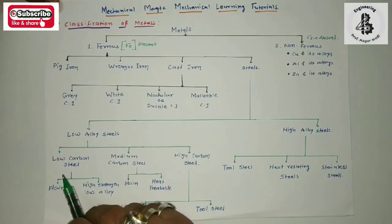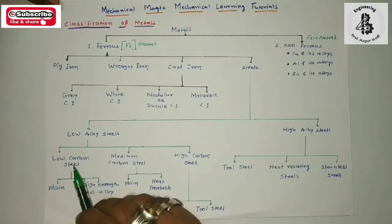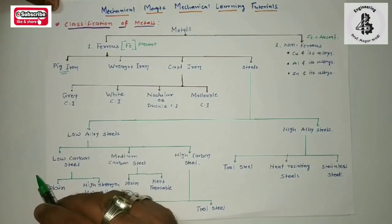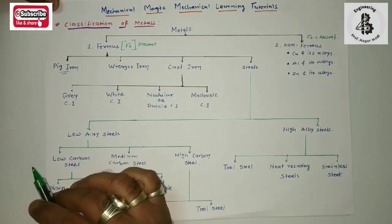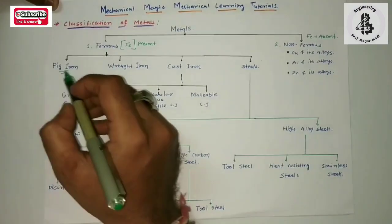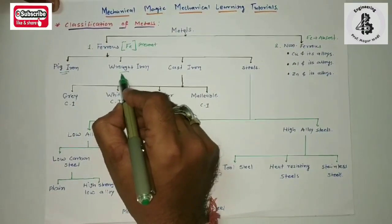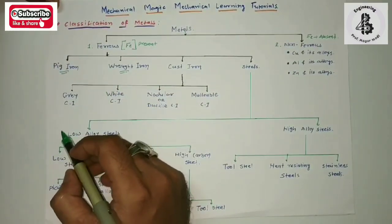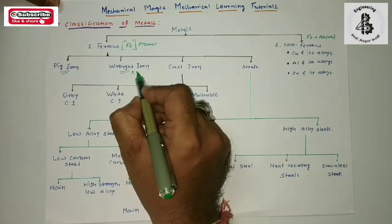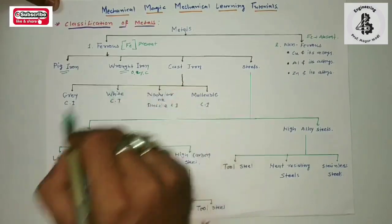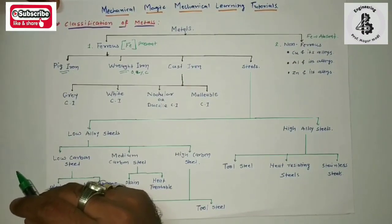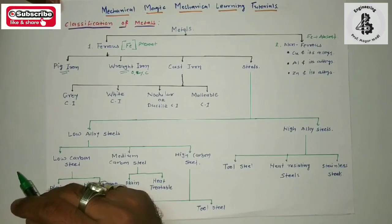Now for the further classification of ferrous materials: starting with pig iron, which is generally found in the earth and is considered a basic material from which different materials can be derived as per requirements. The second type is wrought iron, which contains approximately 0.2 percent carbon and has good ductility — that is the category of wrought iron within the form of steel.